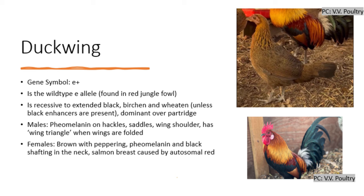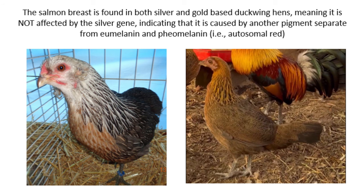The third E-Allele is Duckwing, considered the wild-type E-Allele with a gene symbol of lowercase e-plus, because it is the allele present in Red Jungle Fowl. Red Jungle Fowl hens and roosters tend to be incredibly different in plumage: males are very flashy with phaeomelanin in their hackles, saddle, shoulders, and a wing triangle in the secondary flight feathers, whereas females are a muted brown with peppering over their back and a salmon breast. The salmon breast in Red Jungle Fowl females is caused by autosomal red, meaning both silver and gold Duckwing hens will have this salmon breast.